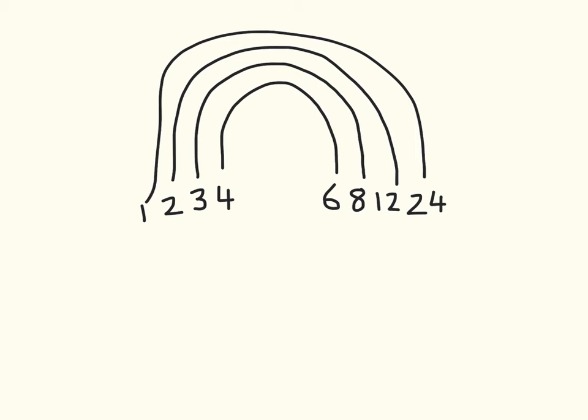So if we're going to list the factors out properly, neatly, we would write like this. You can see there are 8 factors.